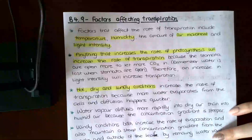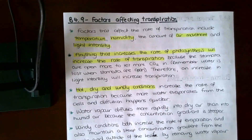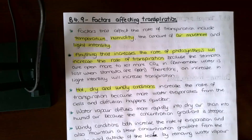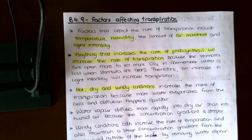Factors that can affect the rate of transpiration include temperature, humidity — so how much liquid is in the air — the amount of air movement, so how windy it is, and light intensity, so how bright it is. Anything that increases the rate of photosynthesis will also increase the rate of transpiration.